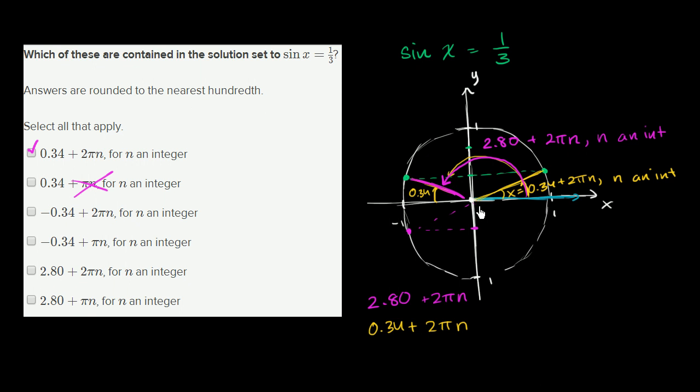Negative 0.34—that's this angle right over here. The sine of that's going to be negative 1/3. If you add a multiple of 2π, you still get negative 1/3. That doesn't work. Same thing for this one. 2.80 plus 2πn—that's what we wrote. Any multiple of it gets you back to that same point, so that one works. 2.80 plus πn: if you're here and add π, you get over here, and the sine isn't positive 1/3, it's negative 1/3. So these are the only two that apply. If you take them together, you have the entire solution set to this equation.